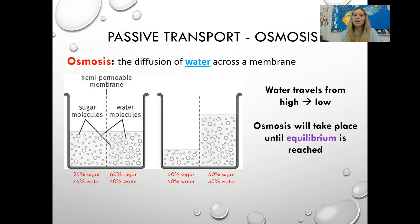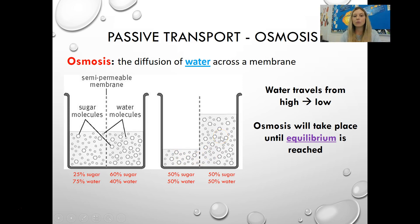If we had a beaker with 25% sugar and 75% water on one side, and 60% sugar and 40% water on the other side, with a semi-permeable membrane between them, water would pass through to the other side until eventually you have 50% sugar and 50% water on both sides. The water is diffusing to reach equilibrium — moving from where it is at a high concentration to where it is low, through the process of osmosis.